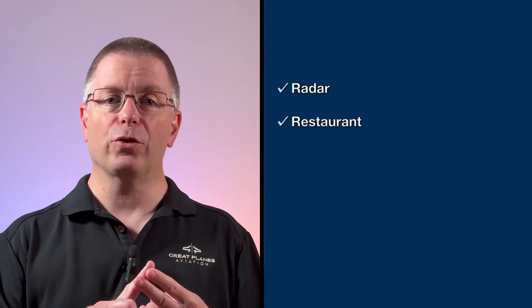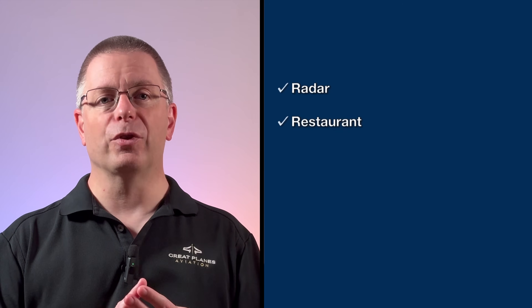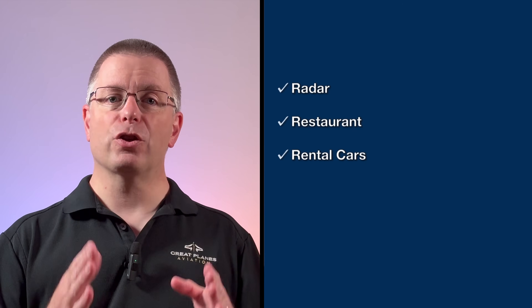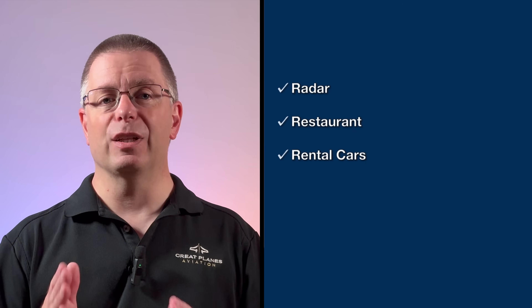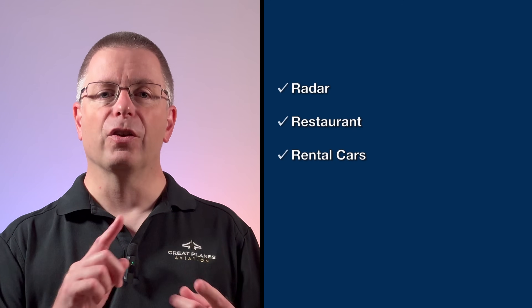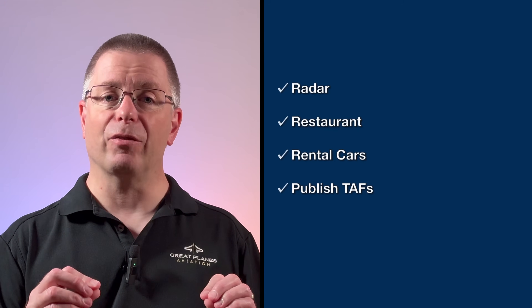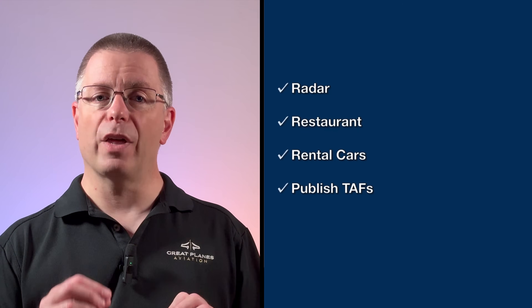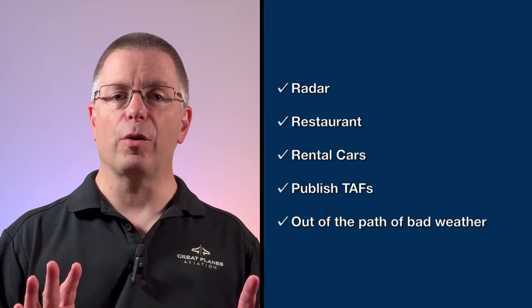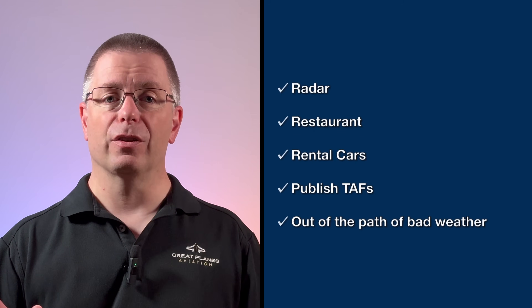What makes a suitable alternate? Flight educator David St. George suggests using the 3R rule. Radar: pick a towered airport with radar coverage. Restaurant: if you're stuck for a while, you'll have a place to grab something to eat and drink. And rental cars: make sure there's ground transportation available to get you where you need to be. I'd also recommend selecting airports that publish TAFs, which are crucial for understanding expected weather conditions, and airports that are well out of the path of bad weather, both in distance and direction. Choosing a good alternate is as essential as calculating your heading or checking your fuel. It's not just about regulatory compliance — it's about being prepared.